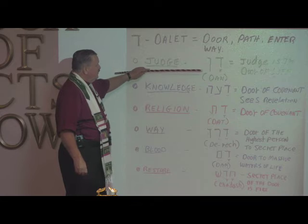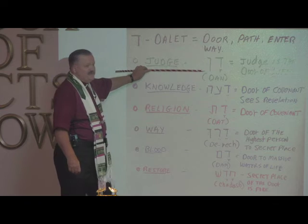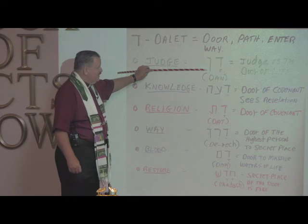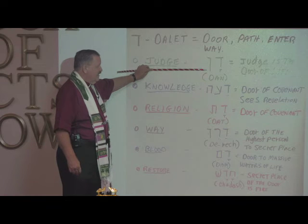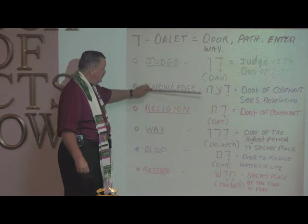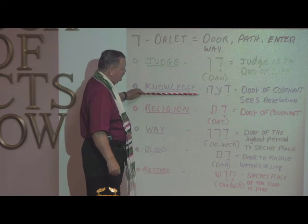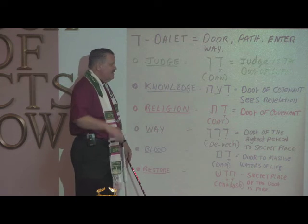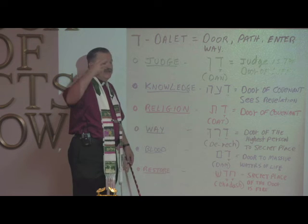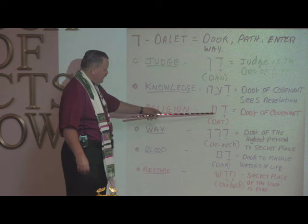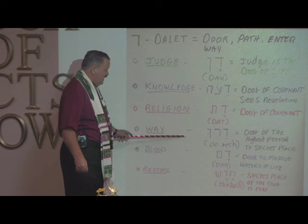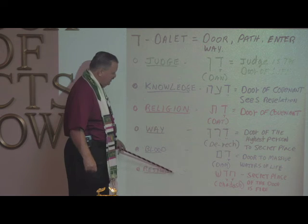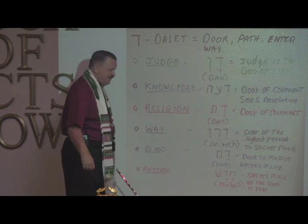Quick review: the judge is the door to life. If you really want life, ask God to show you what you need to see so he can expose and remove, and you can confess and surrender — you're experiencing the work of the judge. Knowledge: at the door of the covenant, sees revelation. True knowledge comes from God. Religion: the door of the covenant — true religion. He is the way: the door of the highest person to enter the secret place with the Father. The blood: the door of massive waters of life. And to restore: the secret of the door is fire, which is the Father. Amen.